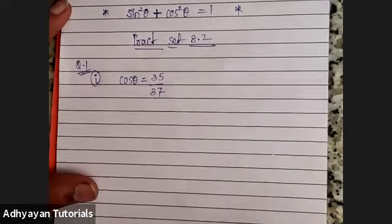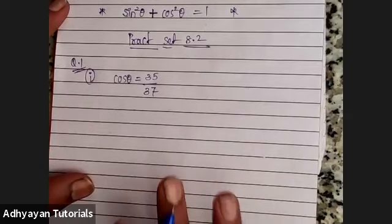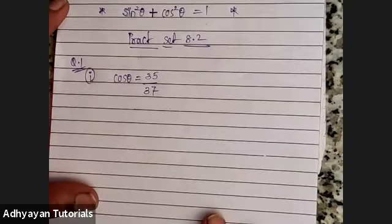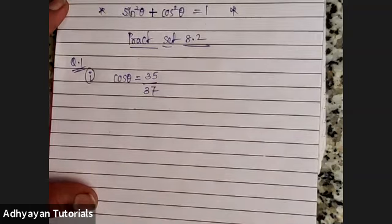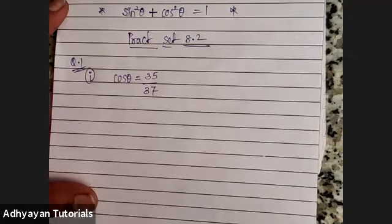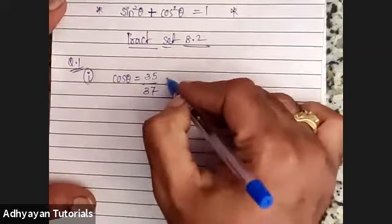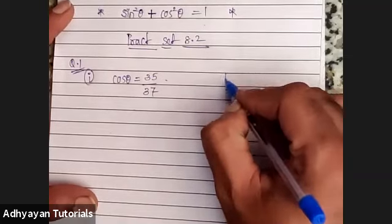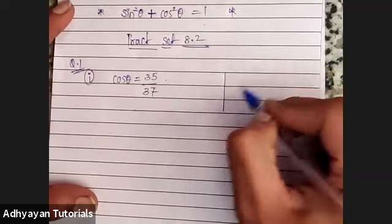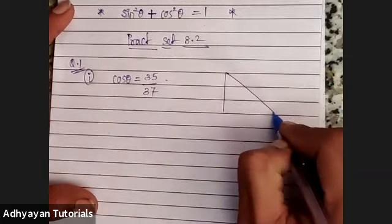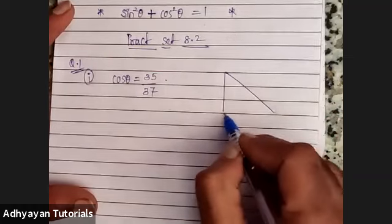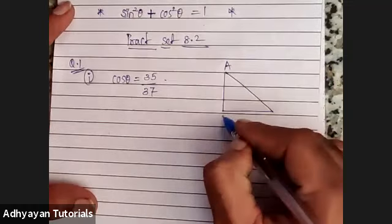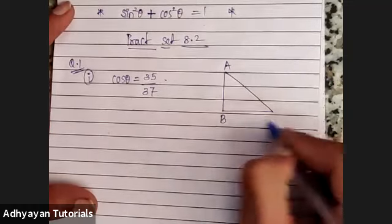Remember the method I'll be using for this particular sum — I call it the triangle method. Why triangle method? Because I need to draw a triangle by myself in order to complete the sum. So I draw a right-angled triangle and name it A, B, C.